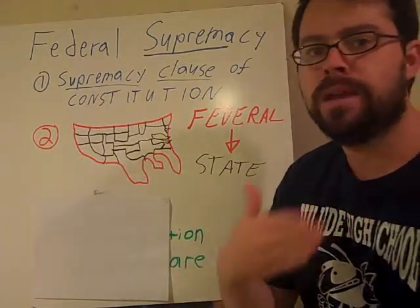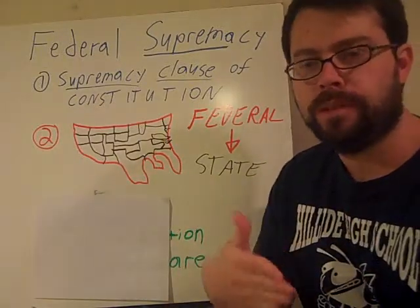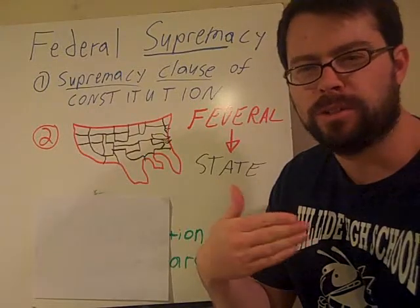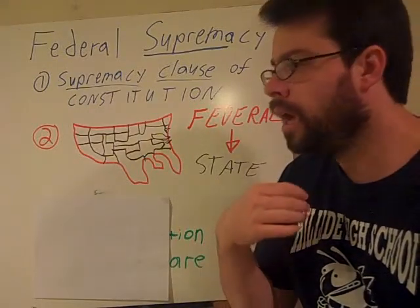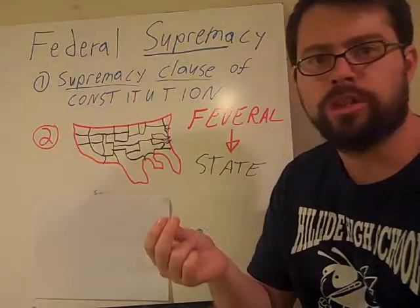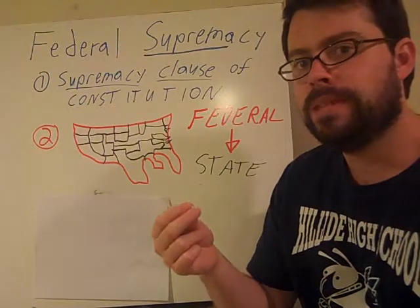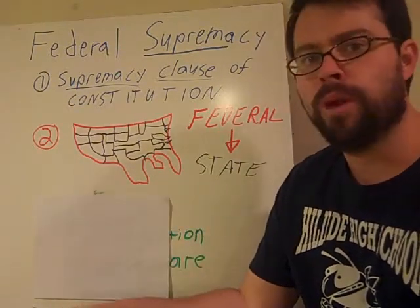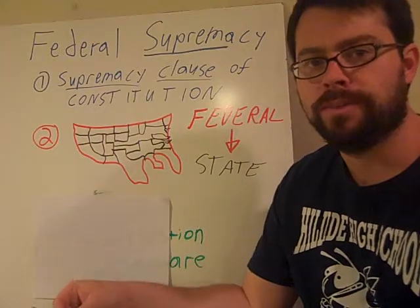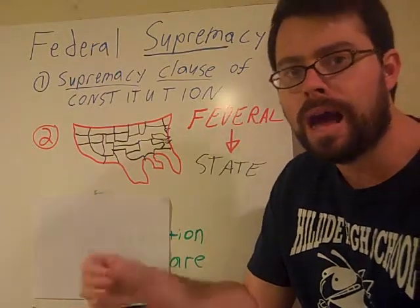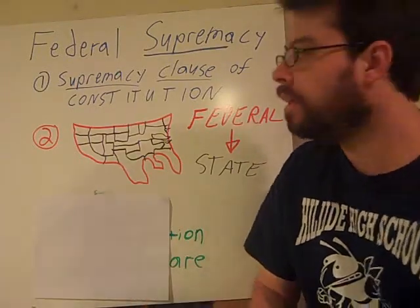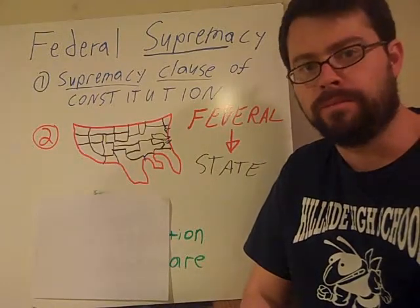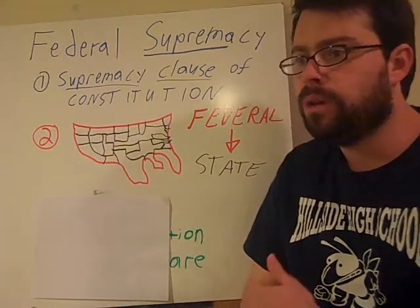For example, the minimum wage. The federal minimum wage is $7.25 an hour, and many argue it should be higher. If a state wants to, it can create a minimum wage that is above $7.25 an hour — you can go higher than the federal minimum wage. But no state can ever go lower than the federal minimum wage.